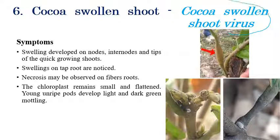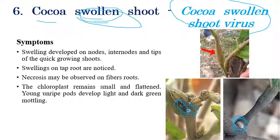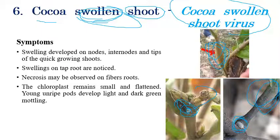Cocoa Swollen Shoot disease is caused by Cocoa Swollen Shoot Virus and is transmitted by mealybugs. As the name indicates, the shoot region is swollen. The characteristic symptoms include swelling of nodes, internodes, and shoot tips. Swelling of tap roots can also be observed, but the major symptom is swelling of nodes and internodes.